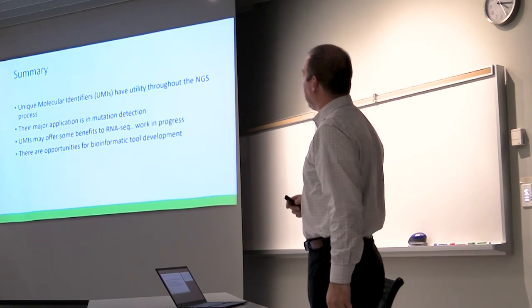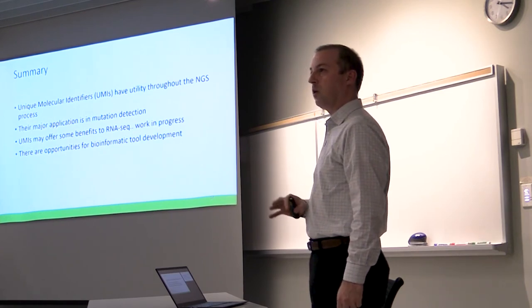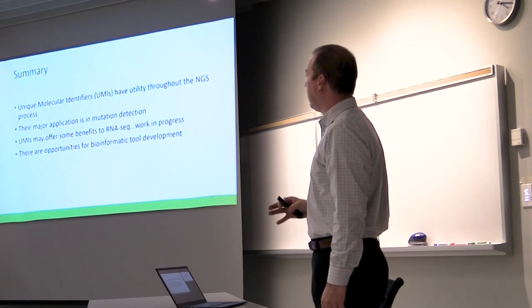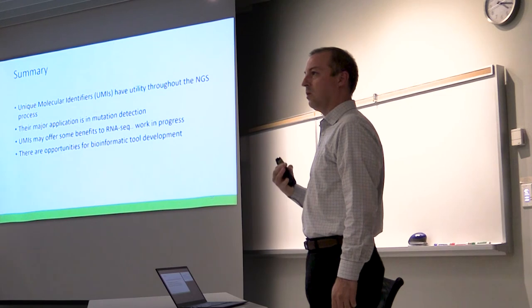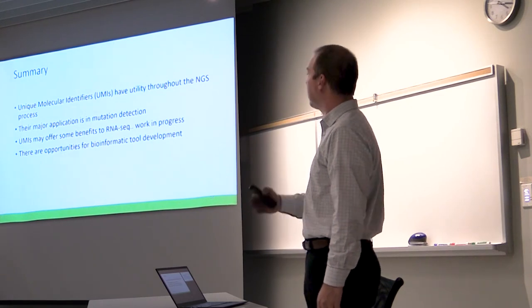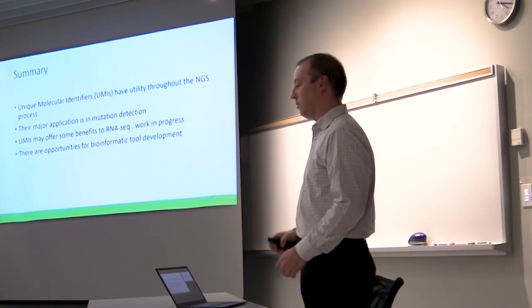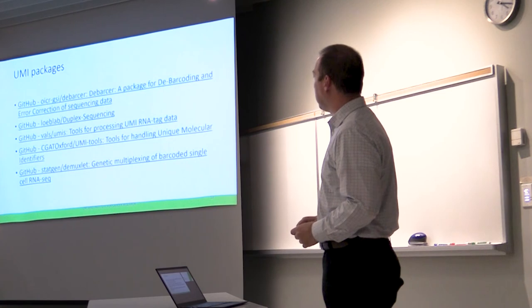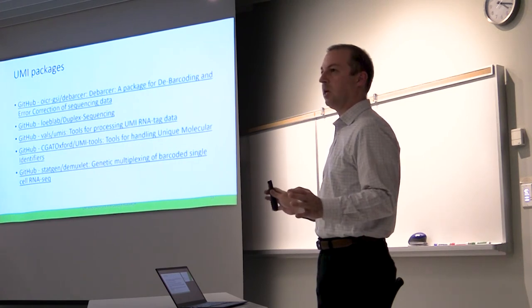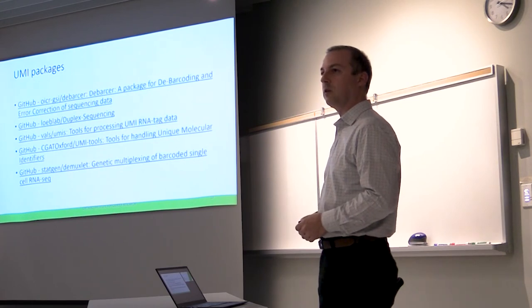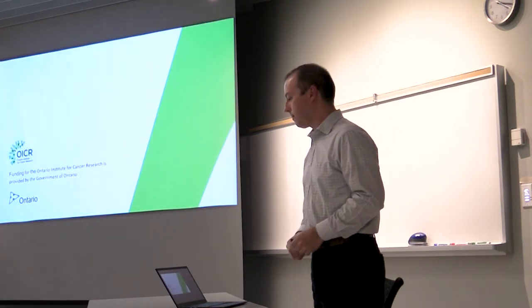The summary that I just want to leave you with is that they do have utility through the whole next-gen sequencing process. I mentioned that their major application that is proven to work is in mutation detection. Their benefits for RNA-seq is still pretty unclear. My position, I get approached by a lot of company representatives who will say that UMIs for RNA-seq are the next best thing and we should buy their products. We always try to make our own decision at OICR. But the takeaway is that with the amount of data, there's lots of opportunities for bioinformatic tool development. Just to leave you with some ideas, there's plenty of competing packages out there on GitHub that use UMIs for various types of applications, and everyone's trying to introduce something novel to the field. So I think for at least some of you, there's some interesting stuff to look into online. Thank you.